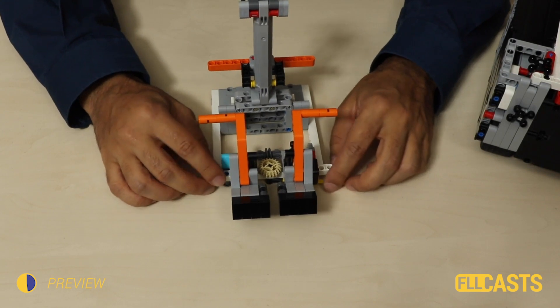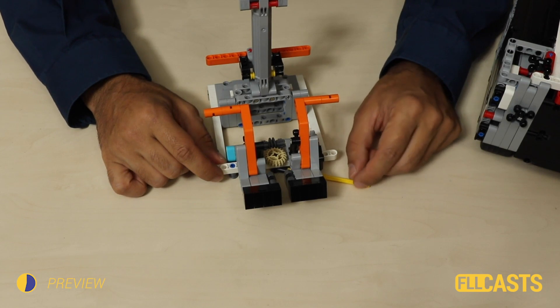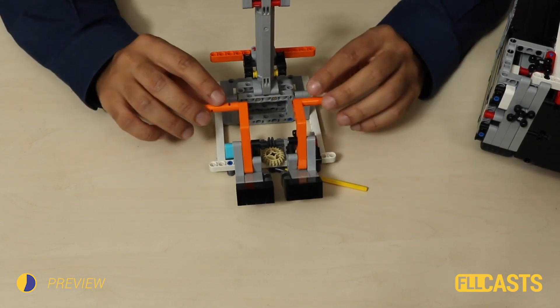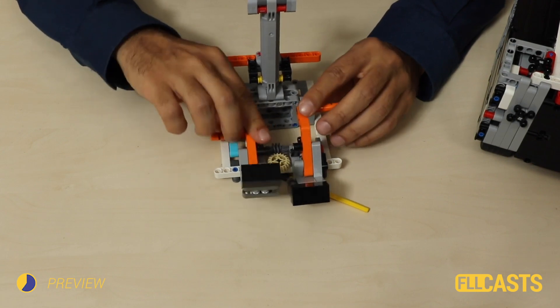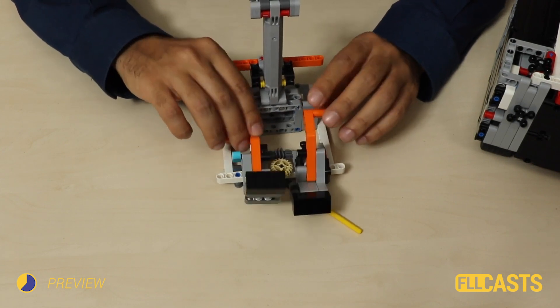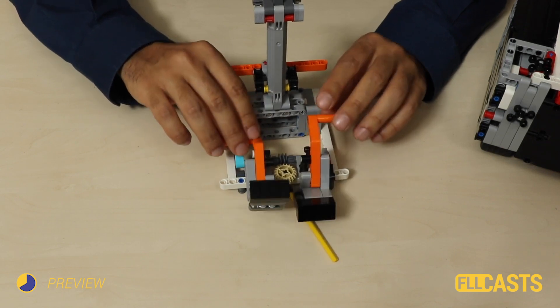What's the goal of the mission? You have this yellow axle here and you must reach the mission model and start pushing these levers. And as you push them, you can see that the axle, the yellow axle, it moves.